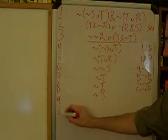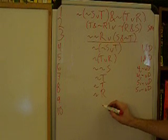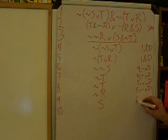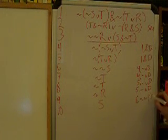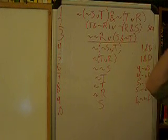And line 10, we're going to find S from line 6, of course, decomposing our double negative. So that's easy. We've gone to there.